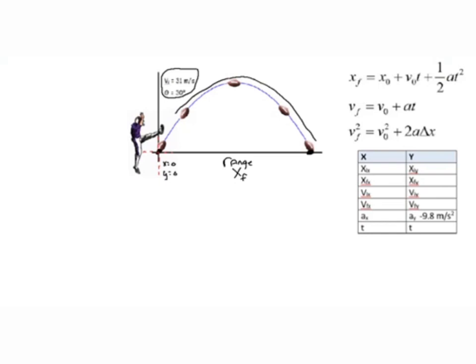We're only dealing in x and y coordinates — x and y data. If I'm kicking a soccer ball at an angle of 30 degrees, that's not strictly x or y, so we're going to have to break it up into its x and y components. The football takes off at 31 meters per second, and I need to know the x component and the y component — vi x and vi y. The angle here is 30 degrees.